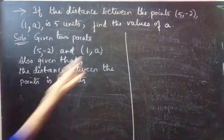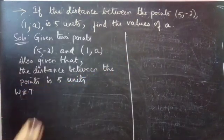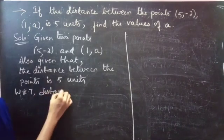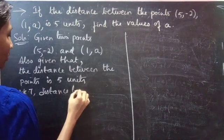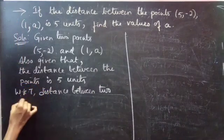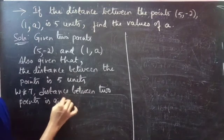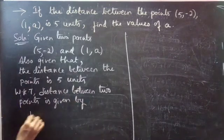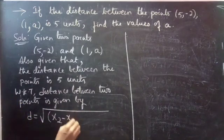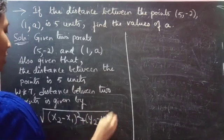We have to find the values of A. We know that the distance between 2 points is given by D equals square root of (X2 minus X1) whole square plus (Y2 minus Y1) whole square.